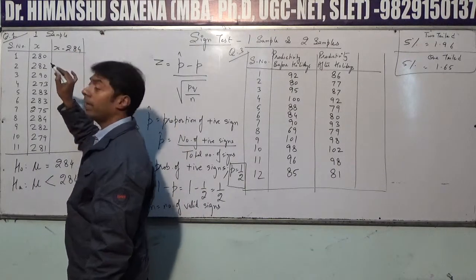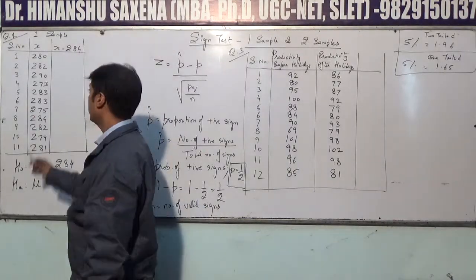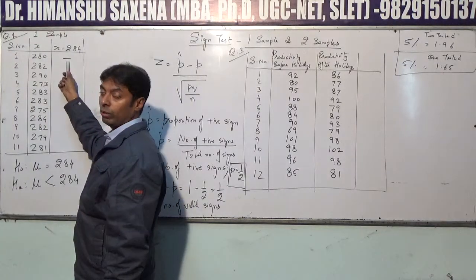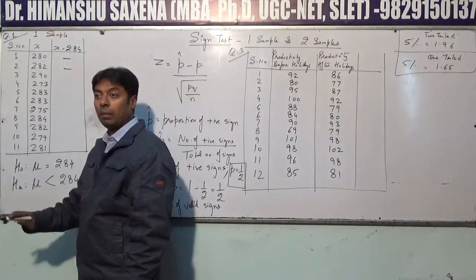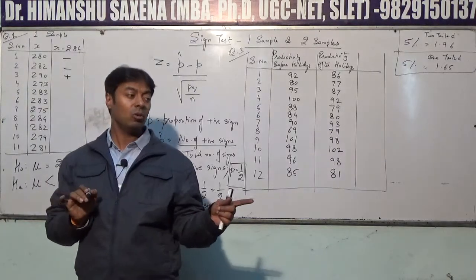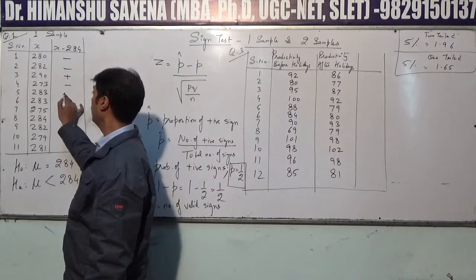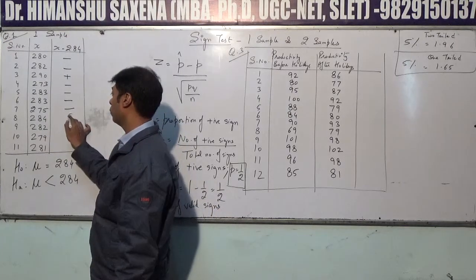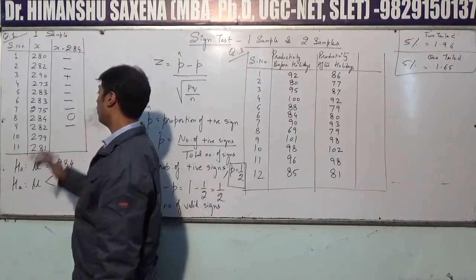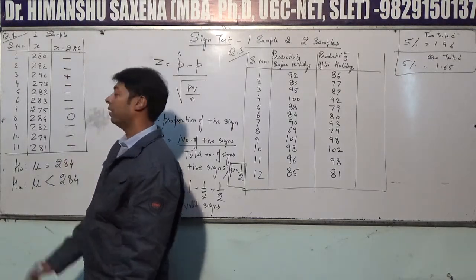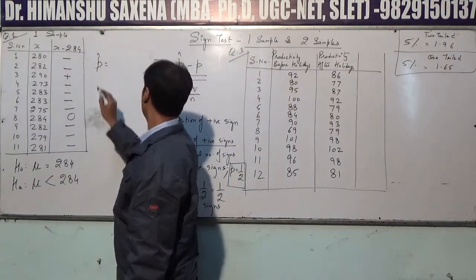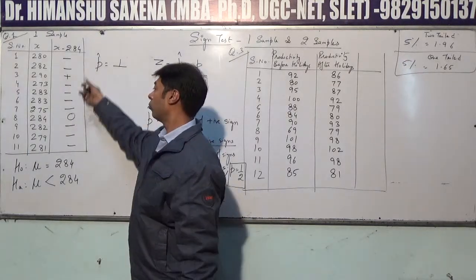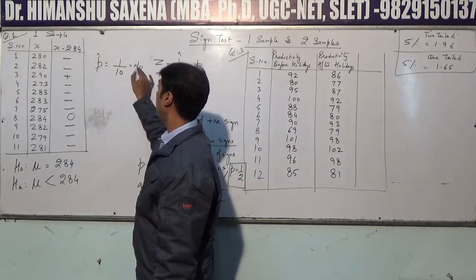We subtract 284 from each value to assign signs. 280 − 284 is negative, 282 is negative, 290 is greater so positive, and so on. When a value equals 284, the difference is 0 and it is excluded. After assigning signs, P-cap = number of positive signs / total valid signs = 1/10 = 0.10.